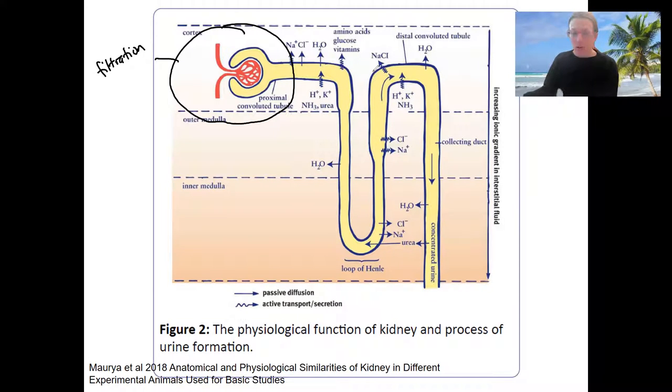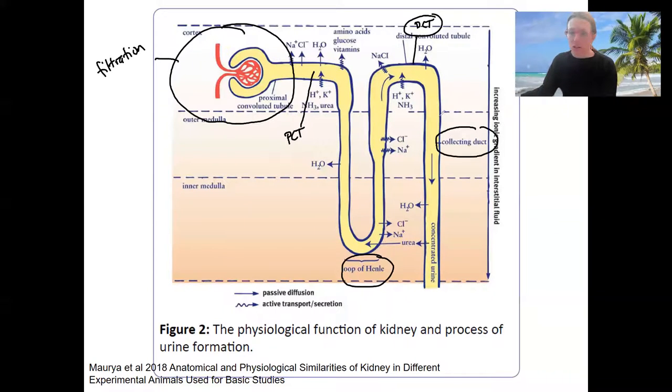This week is going to be about what happens in the rest of the nephron. So we've got the proximal convoluted tubule, the loop of Henle, and the distal convoluted tubule, all part of the nephron. Then we've got the collecting duct, which is connected to the nephron. Reabsorption and secretion are going to occur in each of these locations.